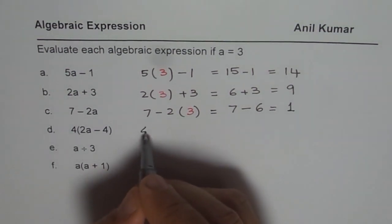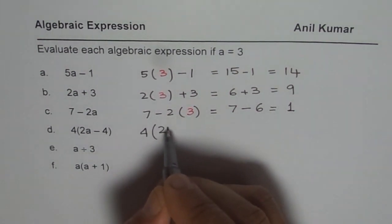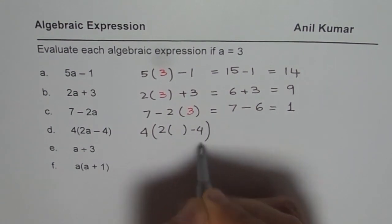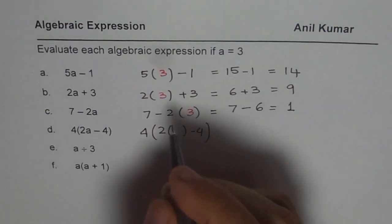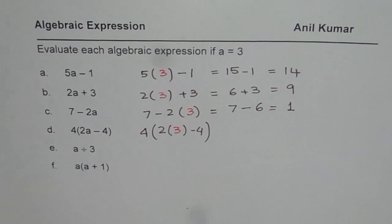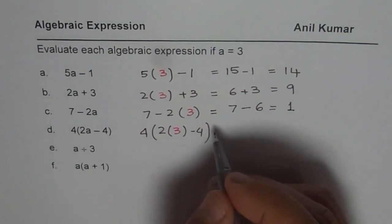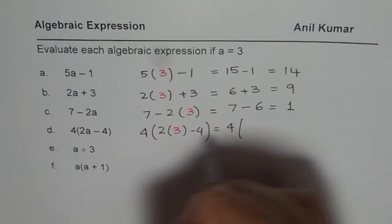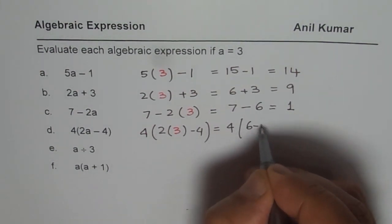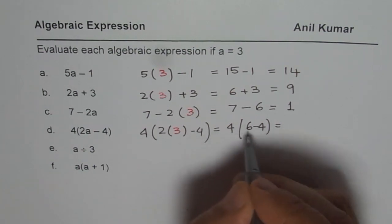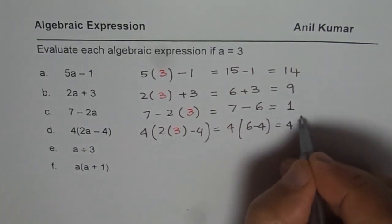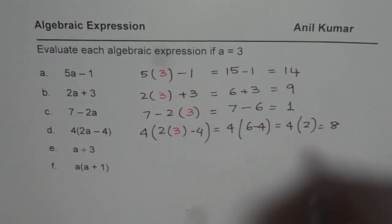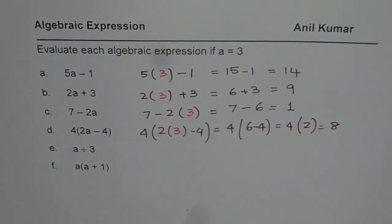Next one: 4 times, within brackets, 2 times a minus 4. a is 3 for us, so I will substitute 3 for a and then calculate. We'll do it in a couple of steps. First inside the bracket: 2 times 3 is 6, giving us 6 minus 4. Inside the bracket, 6 minus 4 is 2, and 4 times 2 is 8. Follow these steps to get the right answer.